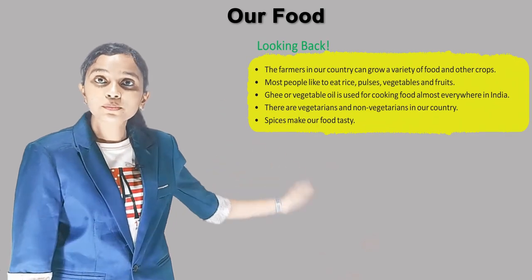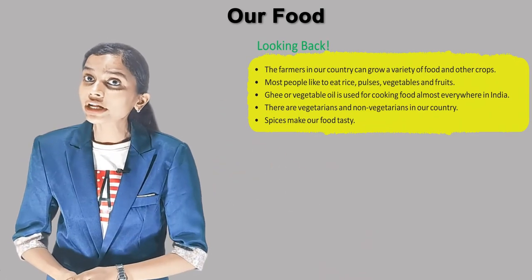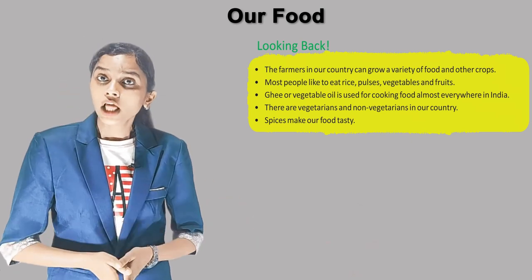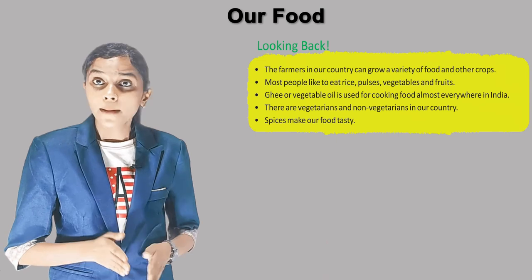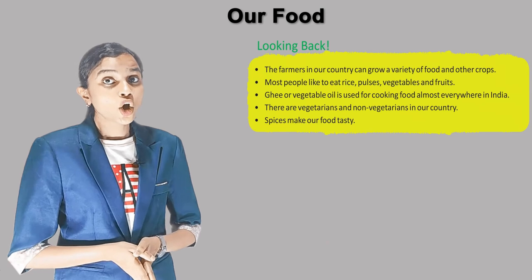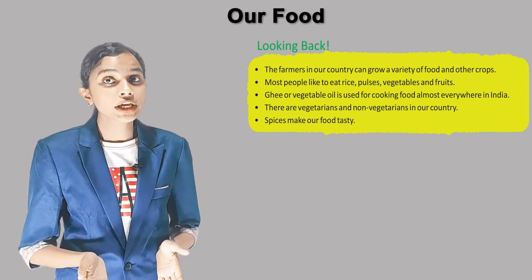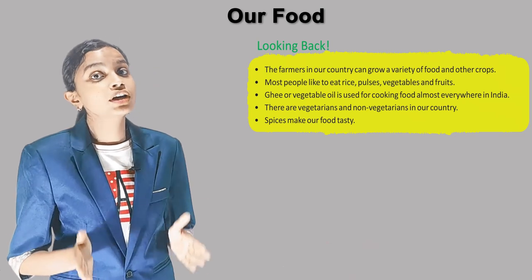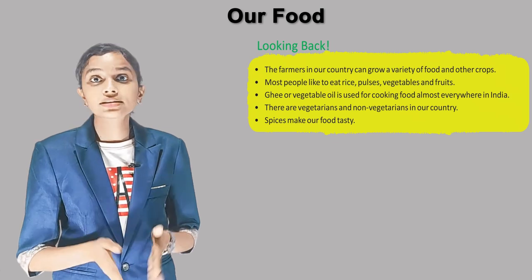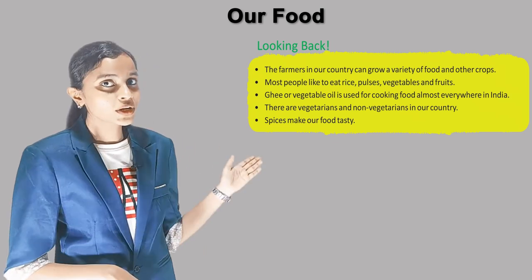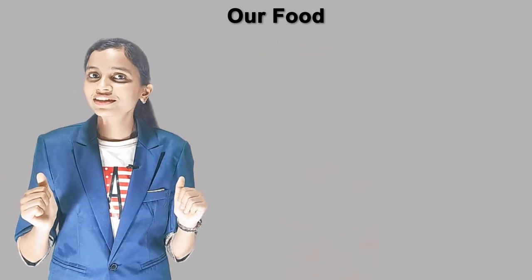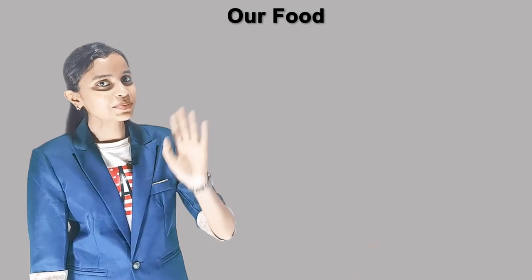Looking back: Farmers in our country can grow a variety of food and other crops. Most people like to eat rice, pulses, vegetables, and fruits. Ghee or vegetable oil is used for cooking food almost everywhere in India. There are vegetarians and non-vegetarians in our country. Spices make our food tasty. Bye children, we'll meet in the next chapter!